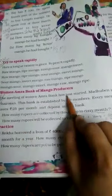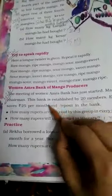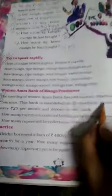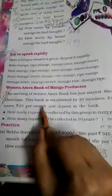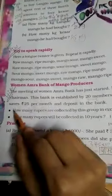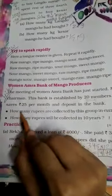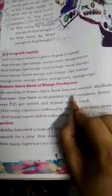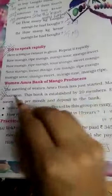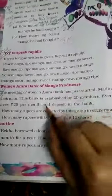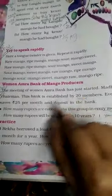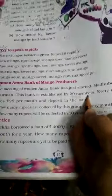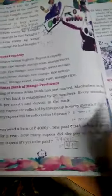The meeting of women — Amra Bank has 20 members and every member contributes Rs. 25 per month. How many rupees are collected by this group every month? 20 members, Rs. 25 per month each member. Then, multiply Rs. 25 per month by 20 members. Every month, Rs. 500 is collected.